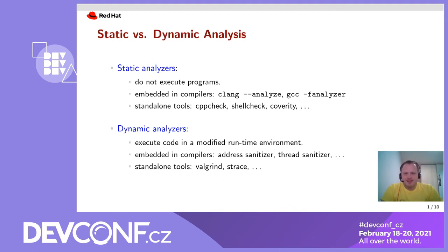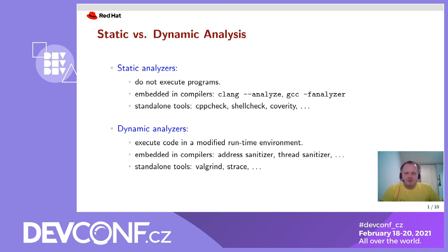Unlike static analyzers, dynamic analyzers need to execute the code. They execute the code in a modified runtime environment to extract the properties we are interested in. They can also be embedded in compilers, like for example address sanitizer, thread sanitizer, and so on. These analyzers are usually easier to automate. Then we have many standalone dynamic analyzers, but in this talk we will focus on Valgrind and strace. Valgrind is a tool for finding memory management bugs, while strace is a tool that records syscalls associated with a running process.